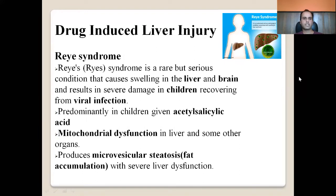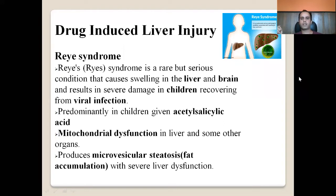Reye syndrome is a rare but serious condition causing swelling in the liver and brain, resulting in severe damage in children recovering from viral infection. This is why aspirin is contraindicated in children under 12 years of age. Reye syndrome is seen in children given acetylsalicylic acid — aspirin — and involves mitochondrial dysfunction in the liver and other organs, producing microvesicular steatosis with severe liver dysfunction.